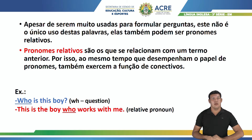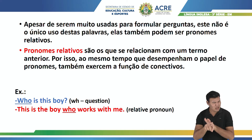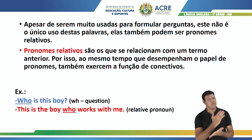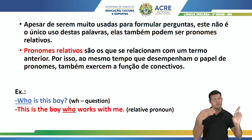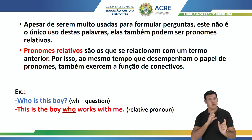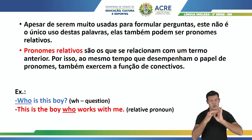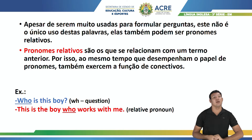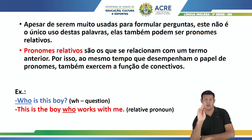Apesar de serem muito usadas para formular perguntas, este não é o único uso destas palavras. As WH questions não são só para fazer perguntas — elas também podem ser pronomes relativos. Pronomes relativos são os que se relacionam com o termo anterior, desempenhando papel de pronomes e também de conectivos. Por exemplo: who is this boy? — usando who como WH question. Já em: this is the boy who works with me — who como pronome relativo.